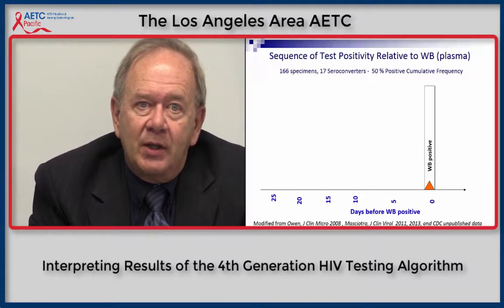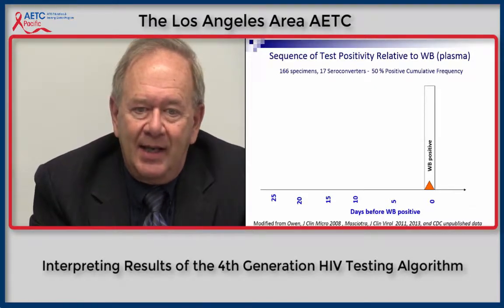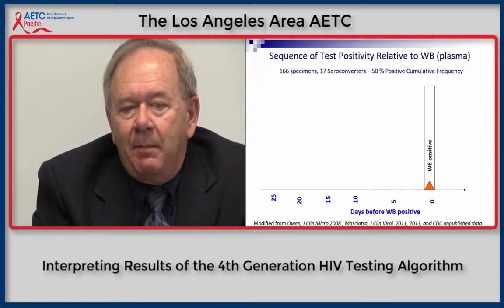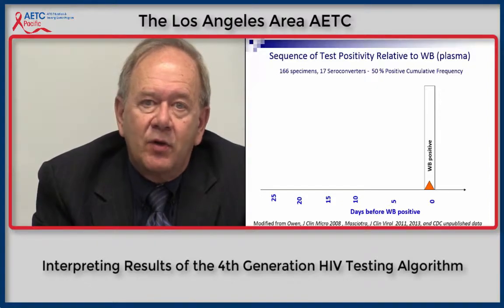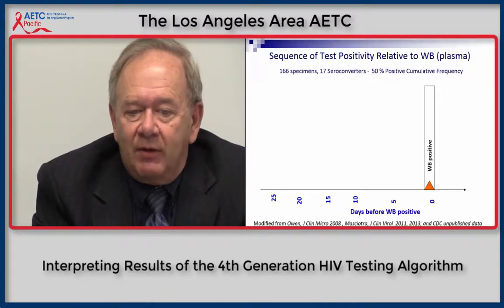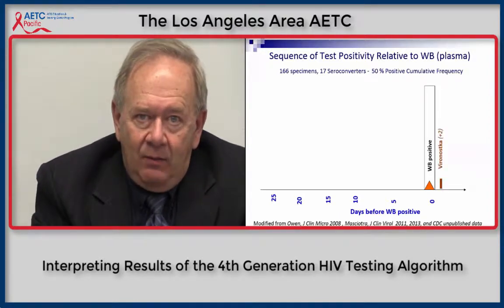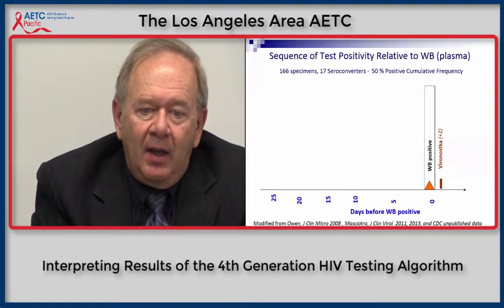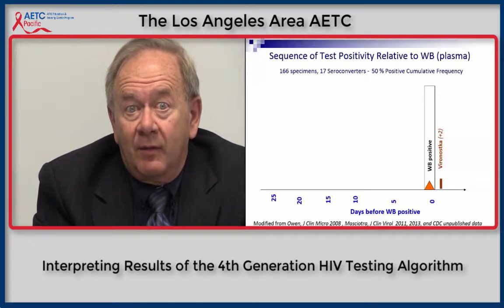CDC has done an evaluation to look at the sequence of all currently FDA-approved antibody and antigen tests and their ability to detect infection. On this slide, we compare these different tests against the time when the Western blot — the former confirmatory assay — turns positive. The Western blot indicates positivity at time zero. The Virenostika assay, the most widely used EIA in the United States until 2007, becomes positive at about two days after the Western blot turns positive, which made the Western blot a good confirmatory assay.